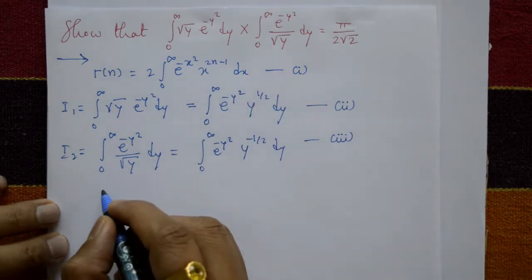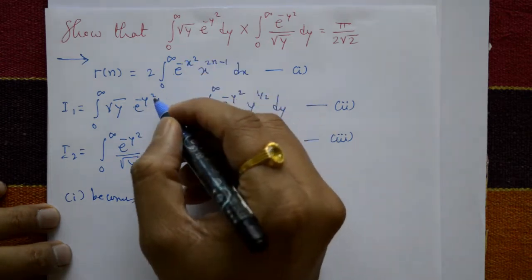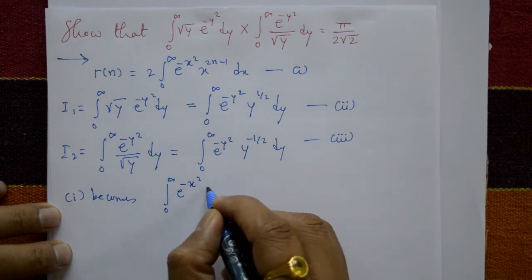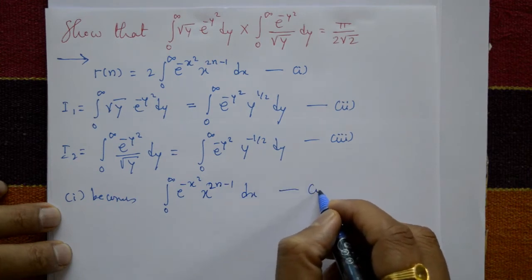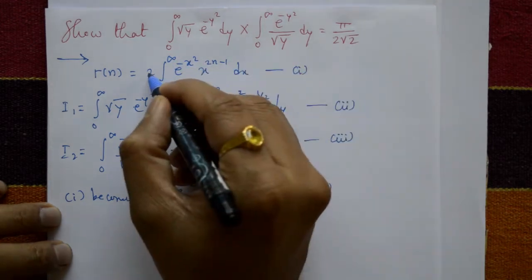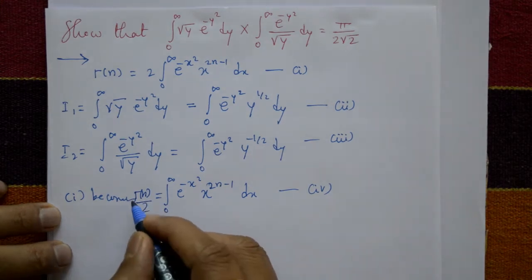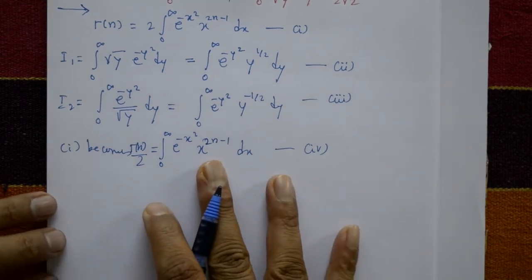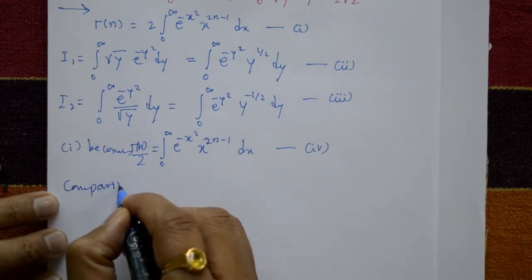From equation number 1, take only the integral part: integration of 0 to infinity of e raised to minus x squared times x raised to 2n minus 1 dx. This is equation number 4. The integral part equals gamma(n) divided by 2, meaning 1/2 times gamma(n).